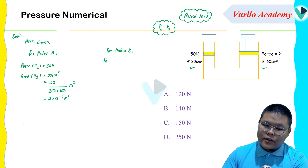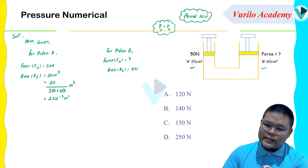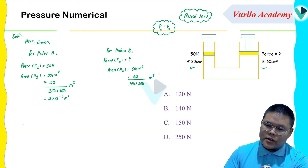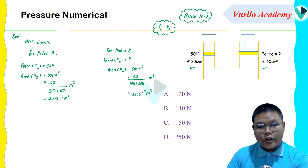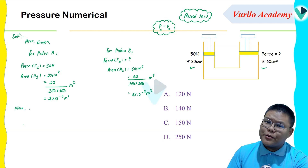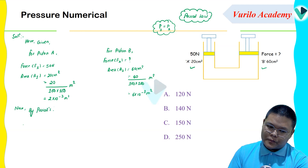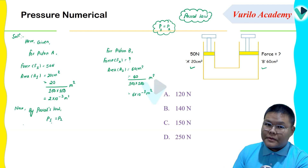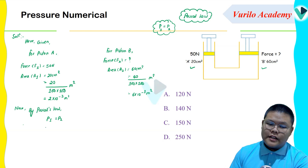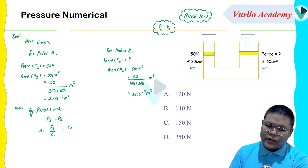The question asks for force F2. We are given: area A1 equal to 60 centimeters square. Divided by 100 into 100, that is 6 into 10 to the power minus 3 meters squared. Simply, by Pascal's Law — use Pascal's Law — the formula is P1 is equal to P2. Pressure one equals force over area one, and P2 equals F2 divided by A2.